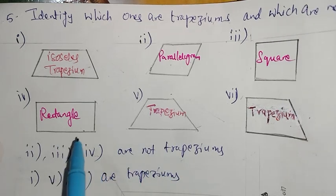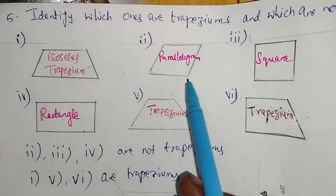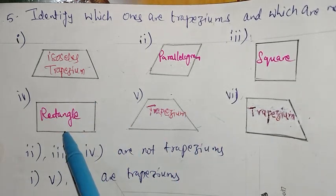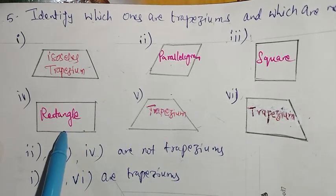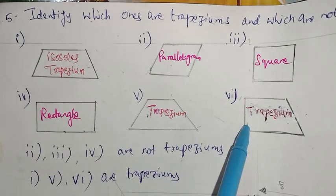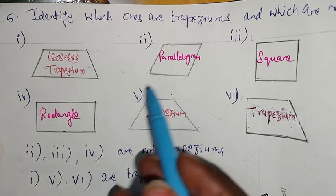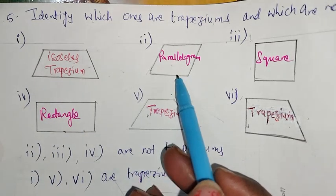The 2nd, 3rd, and 4th ones are not trapeziums. The 3rd one is a trapezium. This includes rectangle, parallelogram, and square.